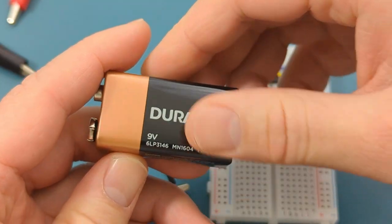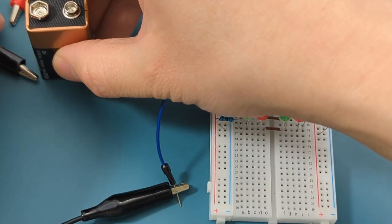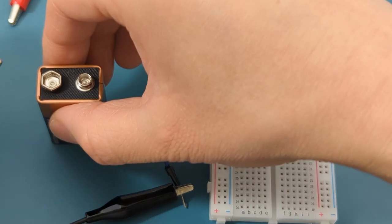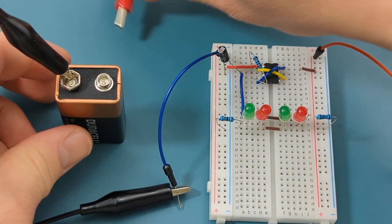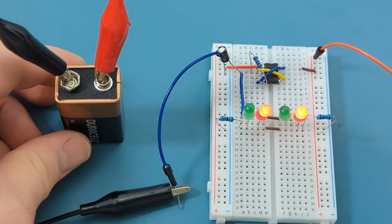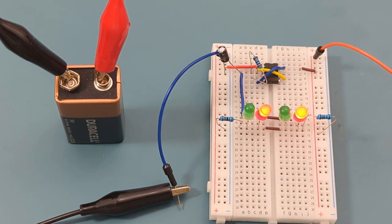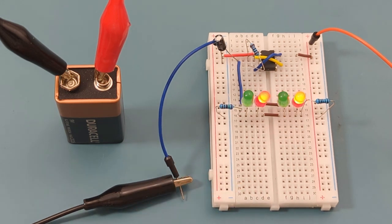Attach the black alligator clip to the negative terminal of the 9 volt battery. Attach the red alligator clip to the positive terminal. The red and green LEDs are alternating just as expected.